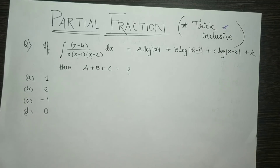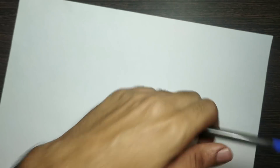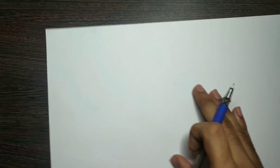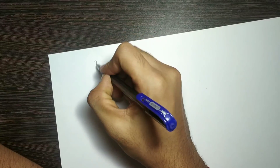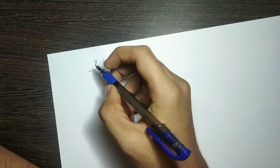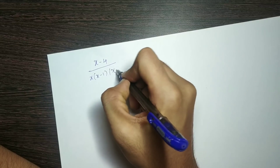So, if you want to solve using partial fractions, you will need a separate sheet. I will solve this problem. If you want to set this up, then we write the integral of x minus 4 divided by x into (x minus 1) into (x minus 2).